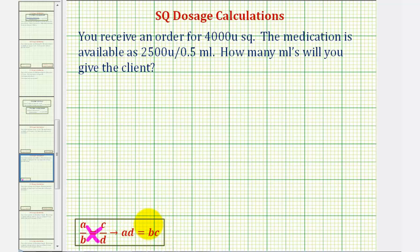So looking at the given information, we'll use the rate of 2,500 units per 0.5 milliliters as our first rate in the proportion. We would have 2,500 units per 0.5 milliliters must equal the rate of 4,000 units to an unknown number of milliliters, which we'll call X milliliters.